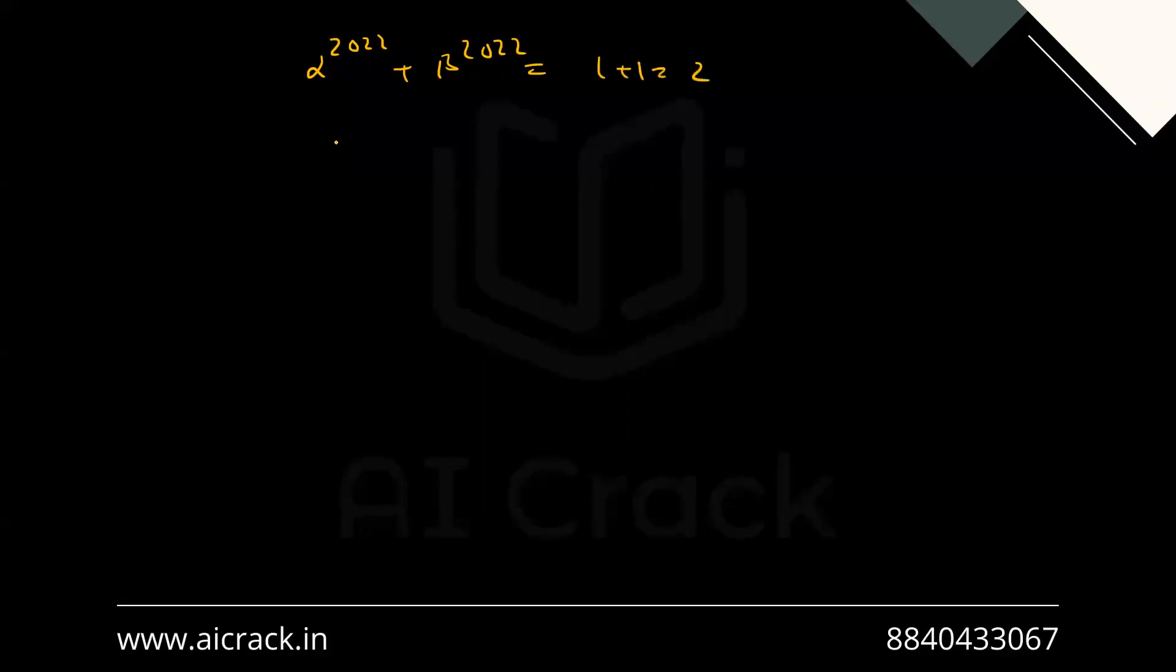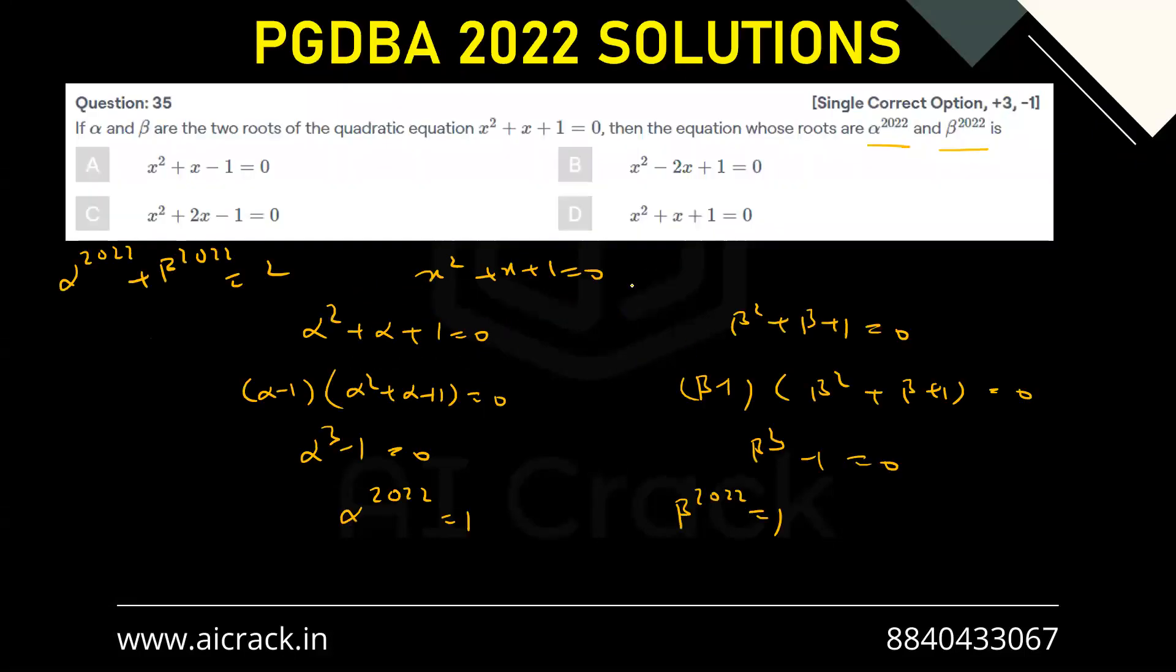Let's call them a and b, so a times b = 1. What kind of equation will we get? x^2 - 2x + 1, where the product of roots is 1 and the sum of roots is 2. So this is the answer: x^2 - 2x + 1. B is the correct answer.